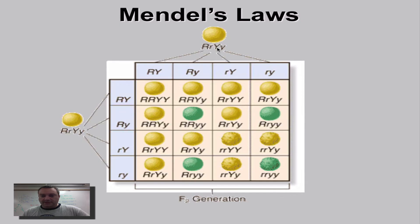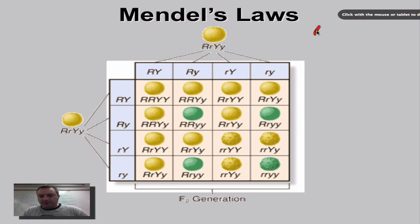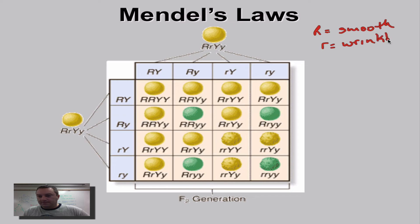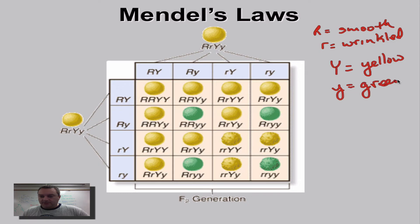We're doing rough and smooth, and yellow and green. I don't usually use Y's because they tend to look the same — that's why I use G's. We foiled them. Big R is smooth, little r is wrinkled. Big Y is yellow, little y is green — that's what our letters mean. Both parents are heterozygous. The boxes inside represent our F2 generation. They did FOIL: first of each pair, the outside pair, the inside pair, and the last pair — same thing on the other side — then it was simply plug and chug.